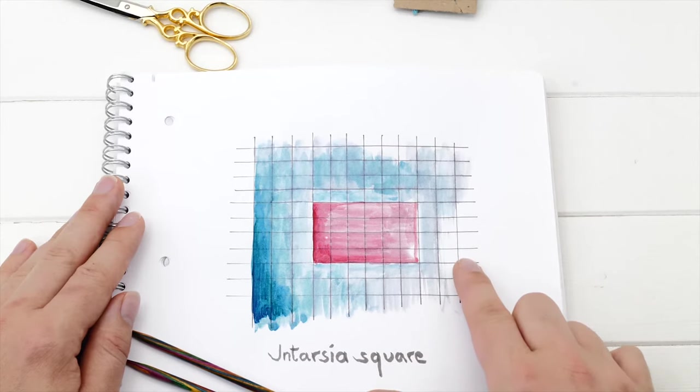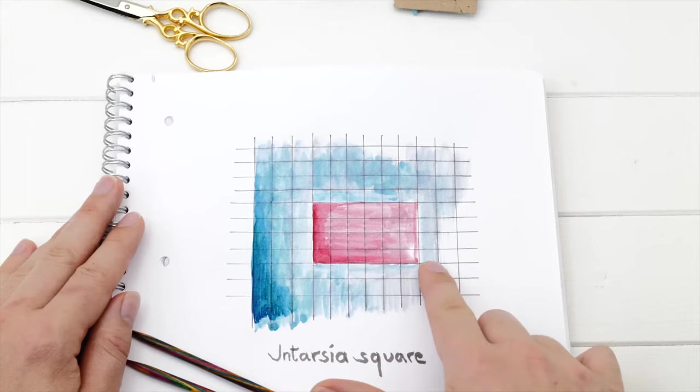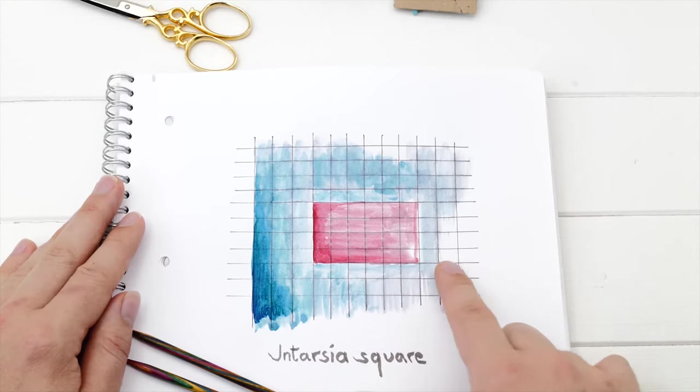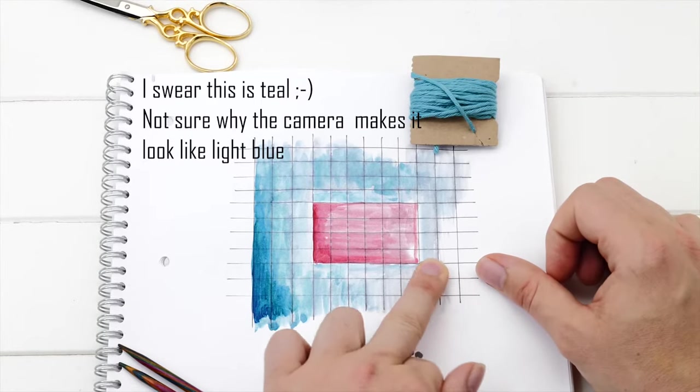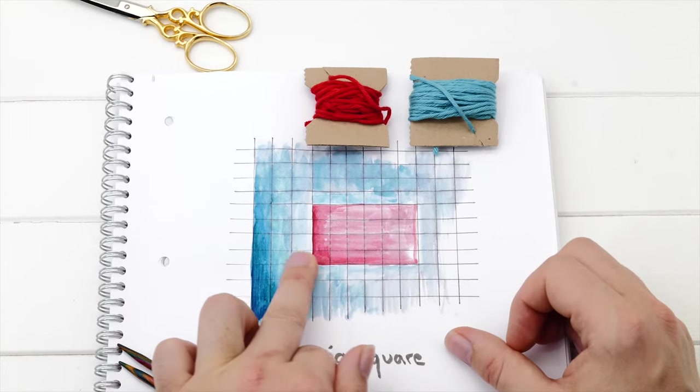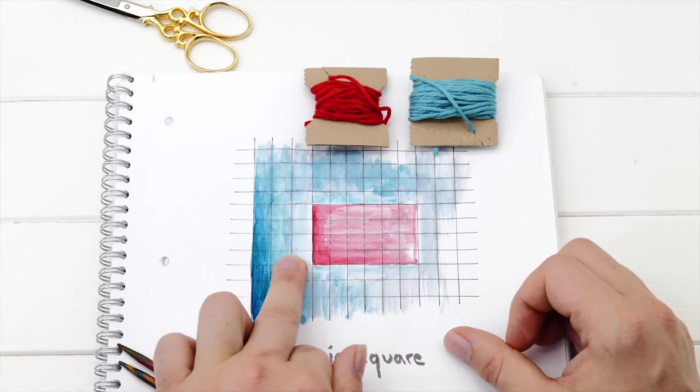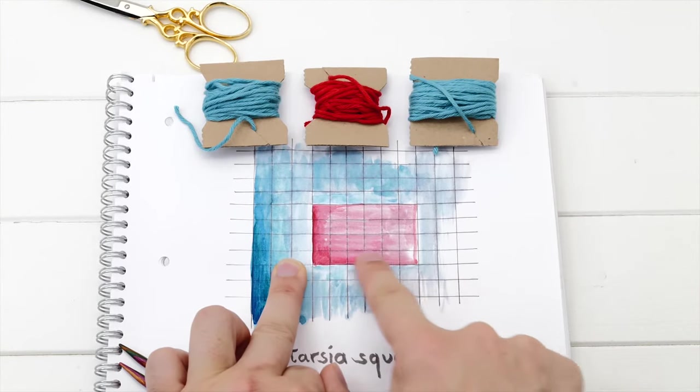What you have to do is go through the first row with a color change and count the bobbins. In this case, we have a teal panel here, so we need a teal bobbin. And then we have the red panel here, so we need a red bobbin. And then we change to teal again, so you need another teal one. You cannot carry the yarn across.